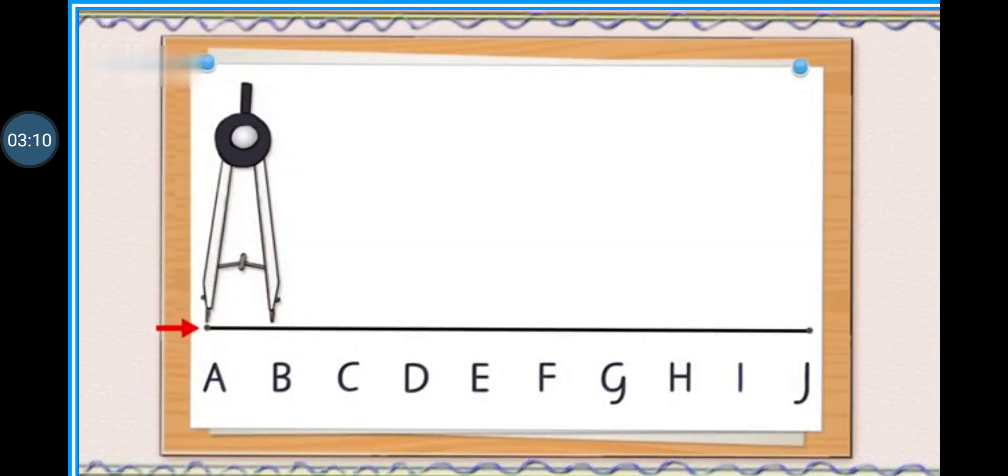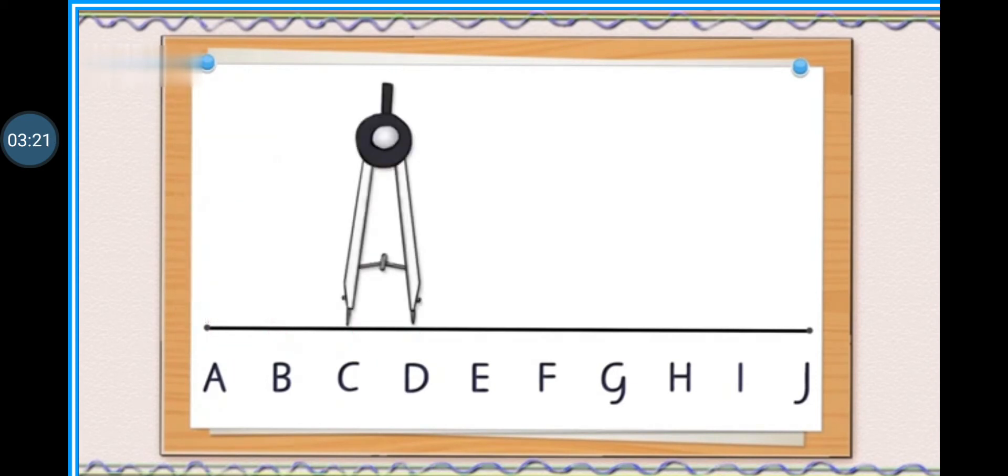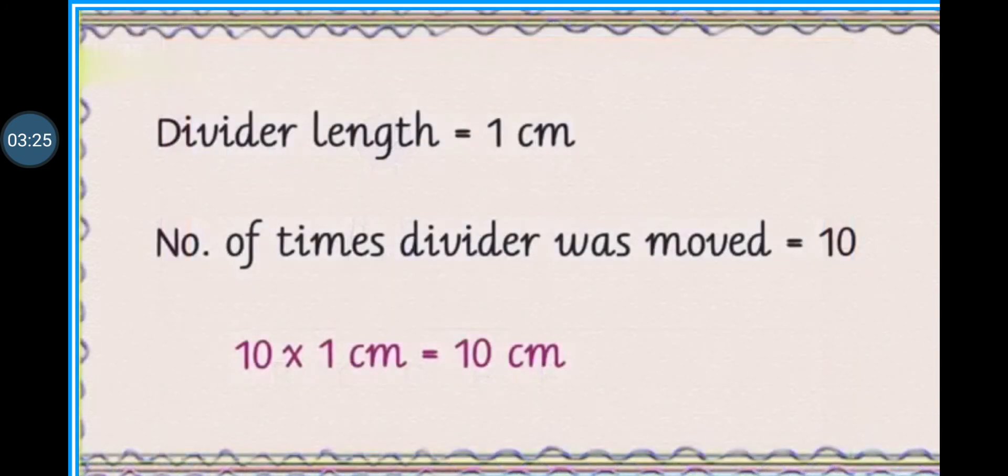We shall place the arm one of the divider at one corner like you are watching and then you can move the divider like this on the line. And you know that we move the divider 10 times and each time it covered 1 centimeter. That's why 10 multiply by 1 centimeter is equals to 10 centimeter.